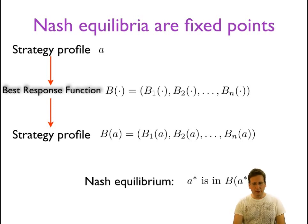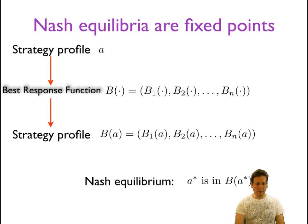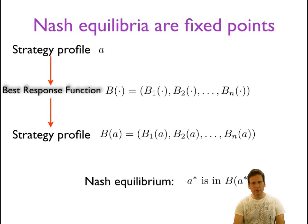Nash equilibria can be seen as fixed points of the best response correspondence. The input is a strategy profile a, the function is the best response functions of all players taken together, and the output is the best responses. There could be more than one output since there can be several best responses for each player, so this is technically a correspondence rather than a function. A Nash equilibrium is an action profile a star such that a star is an element of the best response to a star — each player is best responding to what every other player is doing.